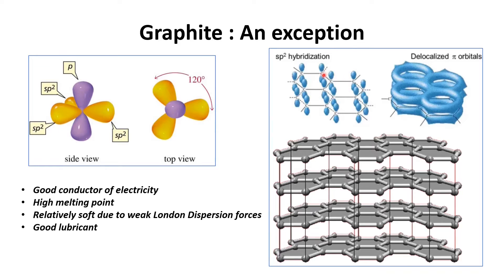Graphite is an exception among covalent network solids. In graphite, each carbon is bonded to three carbon atoms, giving it sp² hybridization. The carbon also has a p orbital which leads to delocalized pi electrons. These delocalized pi electrons give graphite different properties: first, it is a good conductor of electricity because the pi electrons can move freely. Second, it has a high melting point due to more bonding between the carbon atoms. Third, it is relatively soft due to weak London dispersion forces generated by the pi electrons creating dipoles. Fourth, it is a good lubricant because its layers can slide over each other.